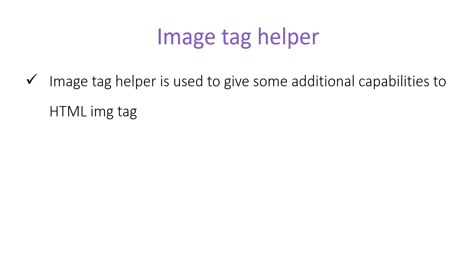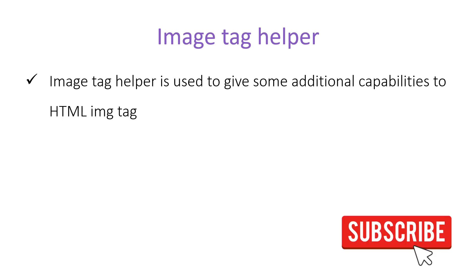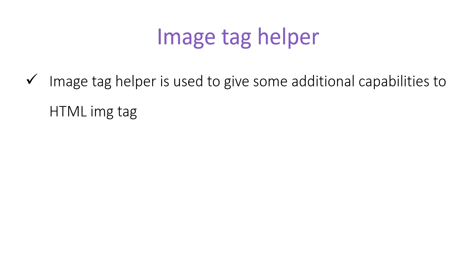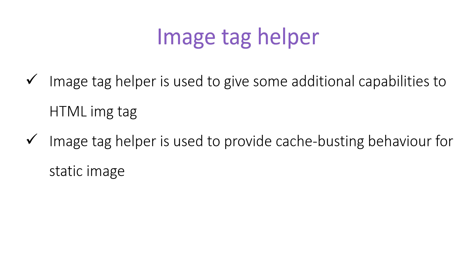Image tag helper is used to give some additional capabilities to the existing HTML image tag. If you are working on an ASP.NET Core MVC application, you are working on a web application, and handling images is one of the most important tasks. Image tag helper is used to provide cache bursting behavior for static images, which we will learn in this video.